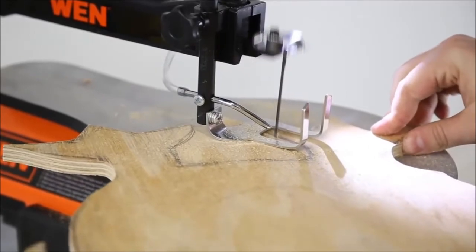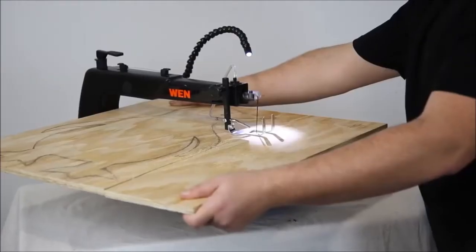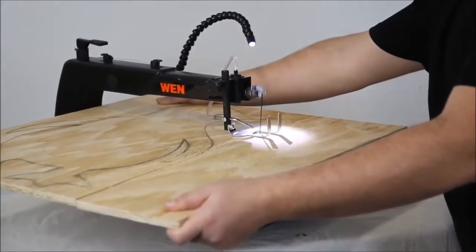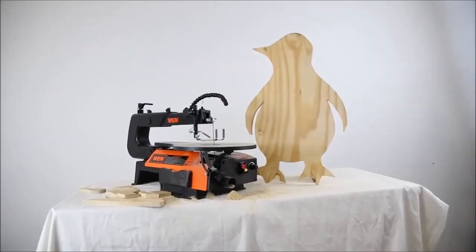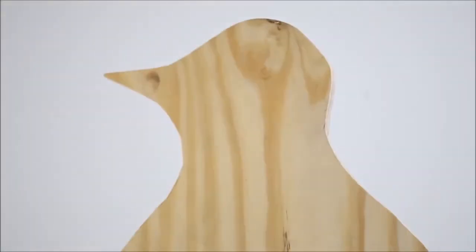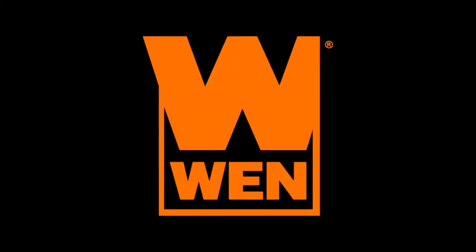With the WEN 16-inch two-direction variable speed scroll saw, you're no longer constrained by the throat of the saw, allowing for larger workpieces and more creative opportunities. Remember when you cut out a two-foot penguin? Remember when.